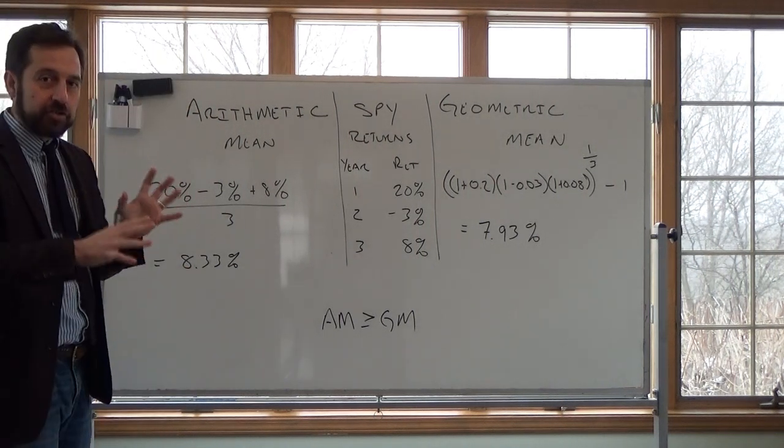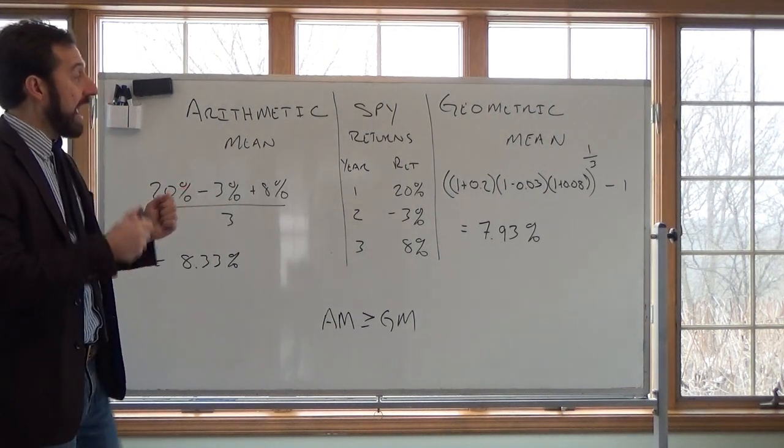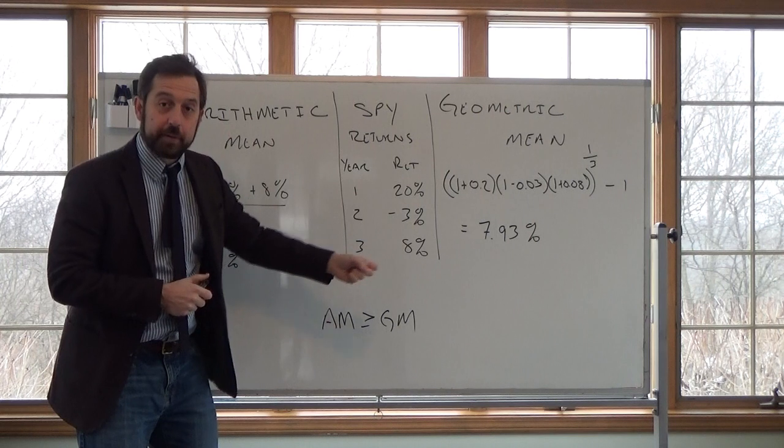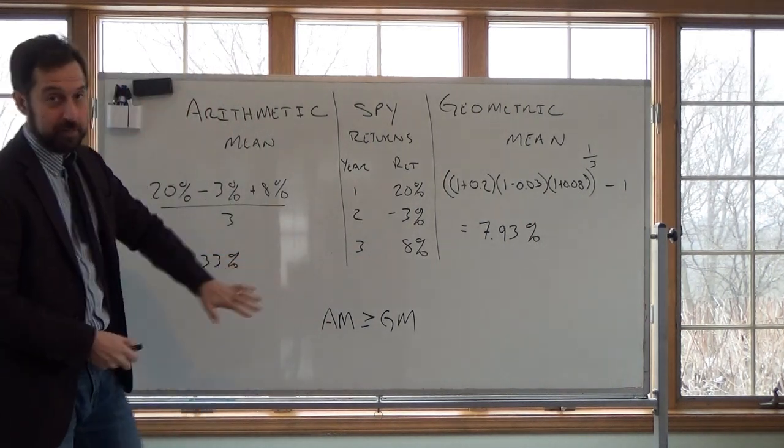Now, the geometric mean answers a different question. So what the geometric mean is going to answer is, if I own the market over this period, what was my annual return? That is not what the arithmetic mean says.